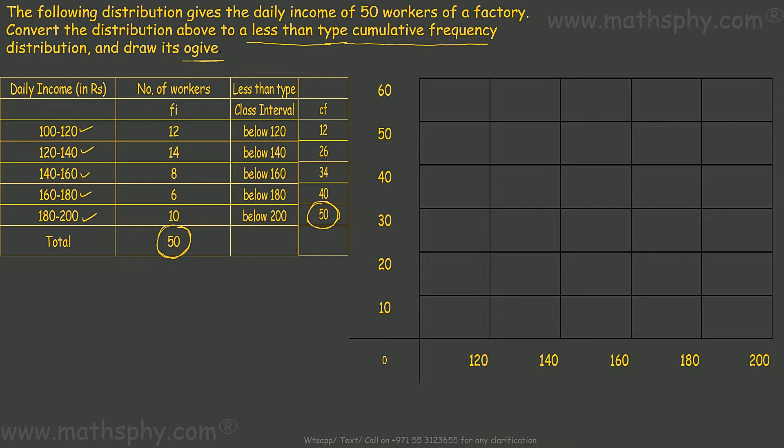Graphical representation, we already know how to plot dots and then collect them together. First will be 120, 120. We have these values on x-axis and cumulative frequency on y-axis. x value 120, y value 12. We can call it x1, y1.